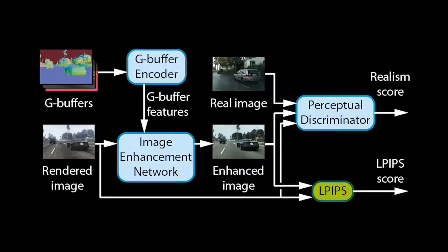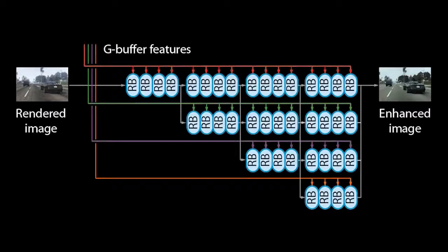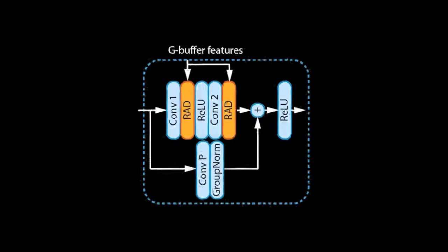Let us now look at the Image Enhancement Network to see what we can do with these multiscale tensors. The Enhancement Network is based on HRNet, which processes images at multiple scales in parallel. Each scale of the feature tensors matches a scale in the network. The network consists of many residual blocks at each scale. Within the residual blocks, we replace the Batch Normalization layers with our own Rendering Aware Denormalization blocks, or RAD for short. The RAD layers modulate features based on the rendering information in the G-buffer feature tensors. For more details, we refer to our paper.